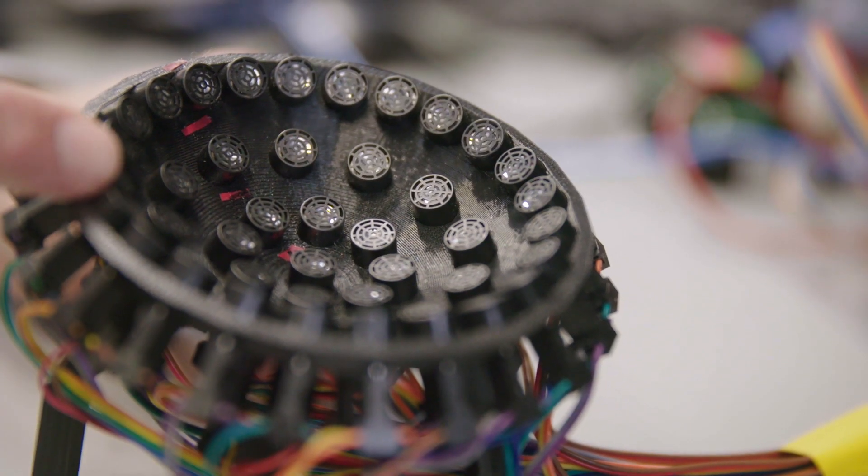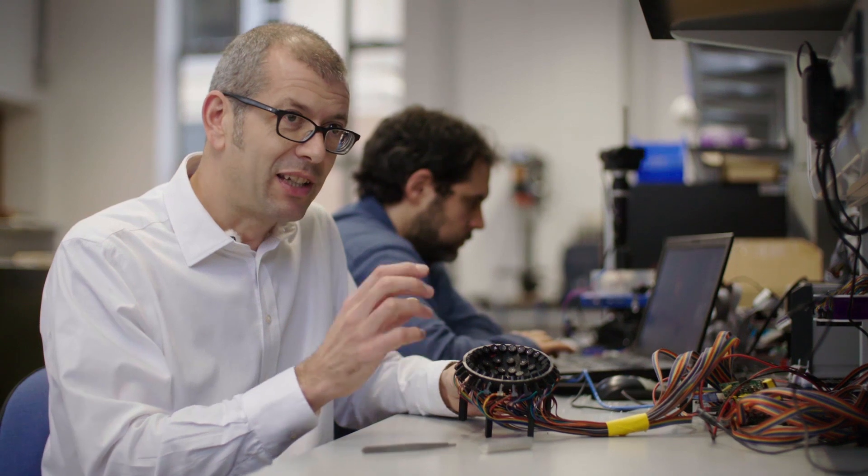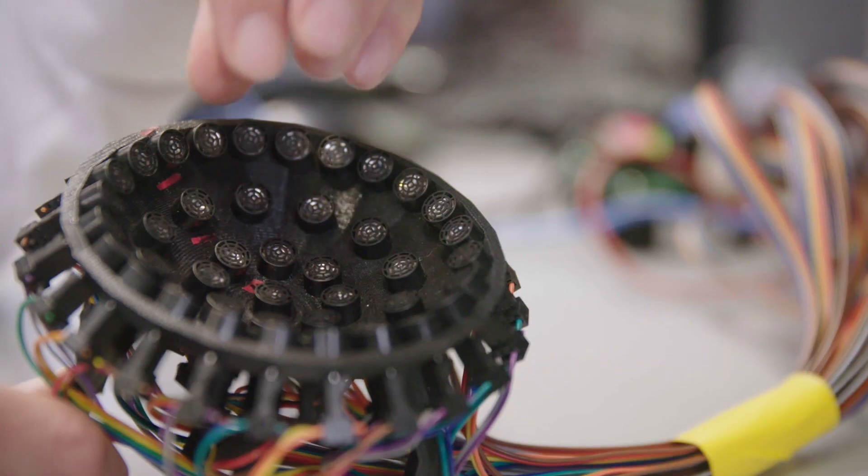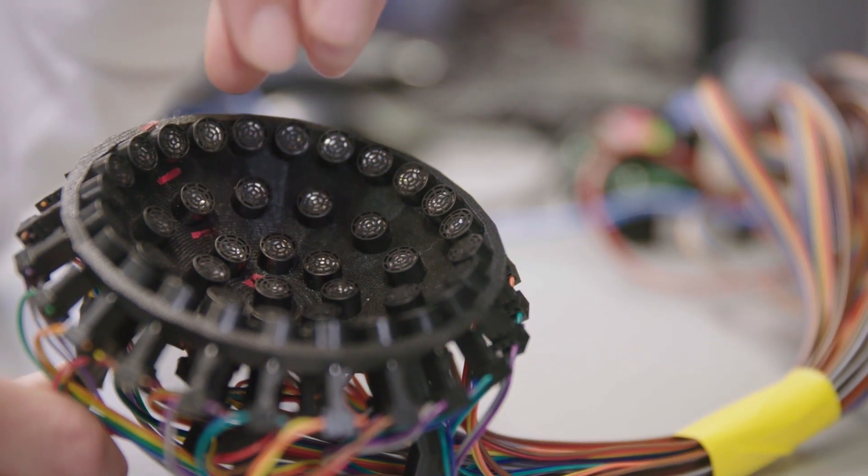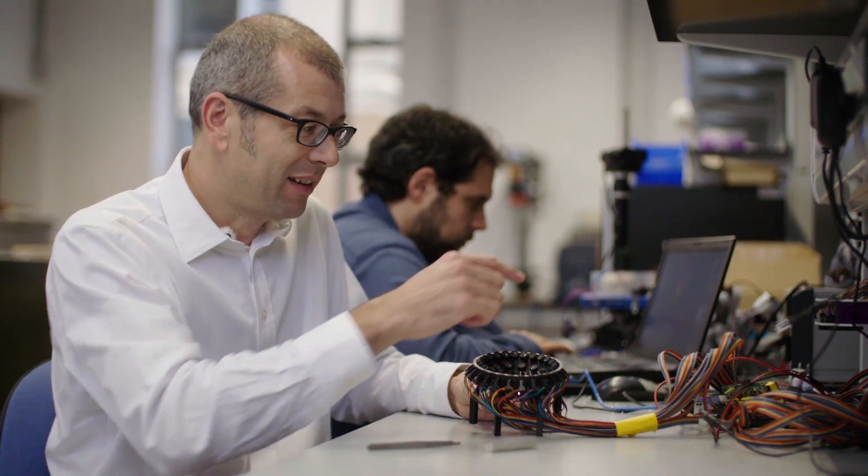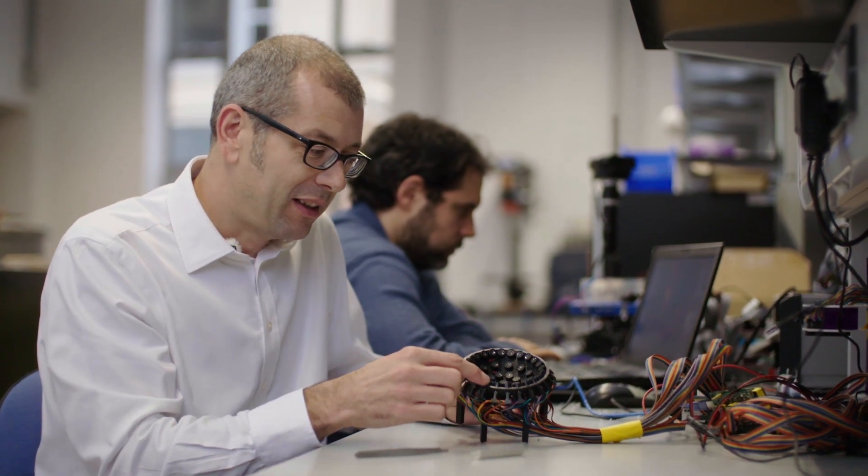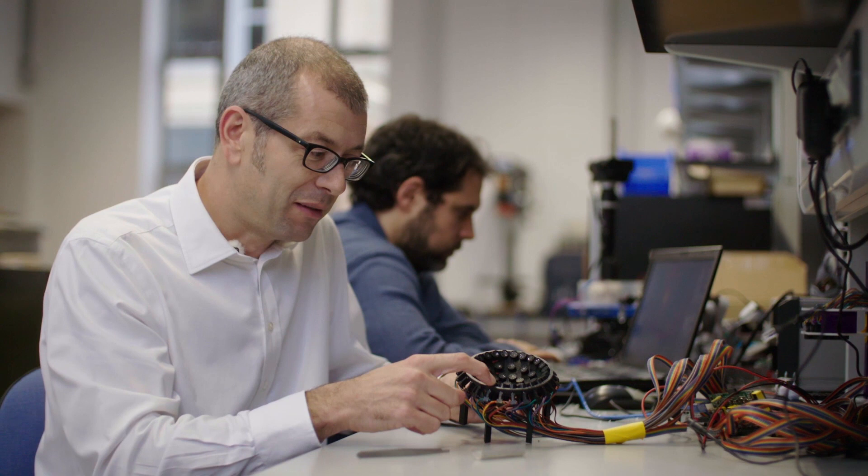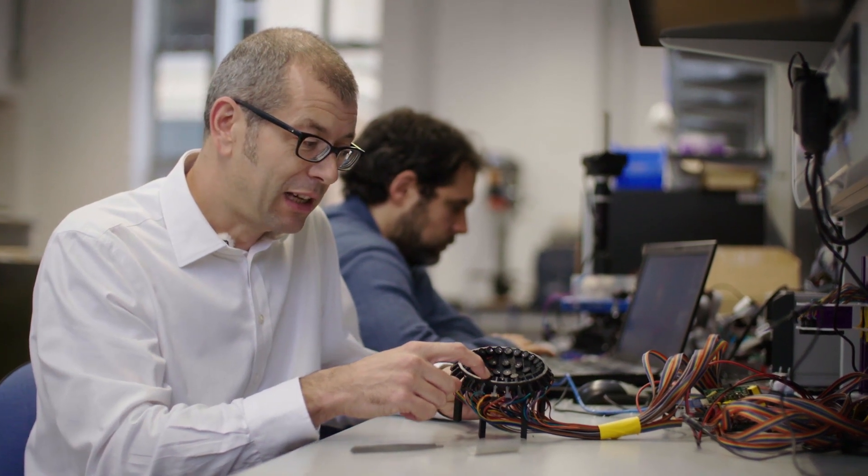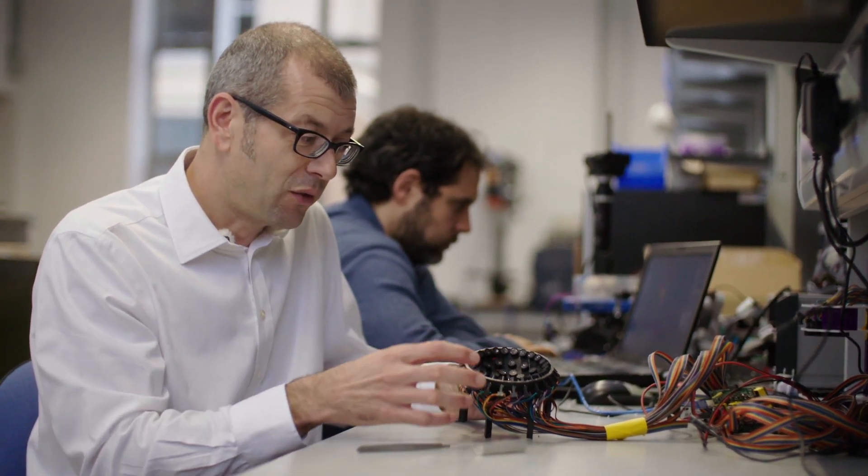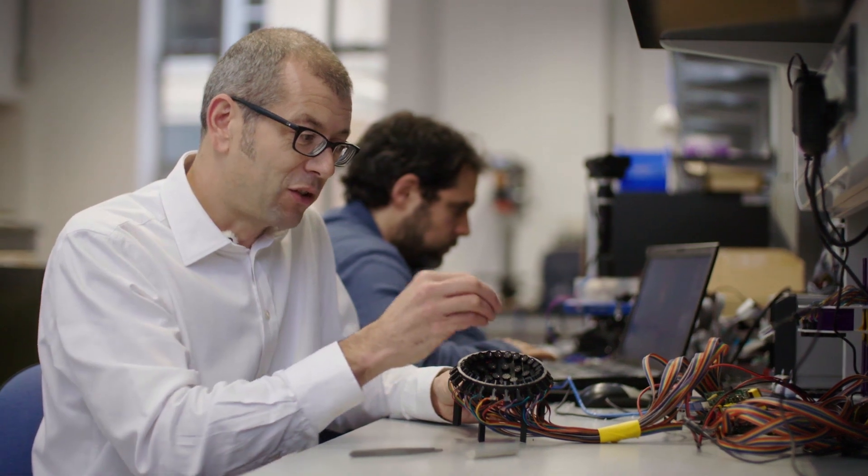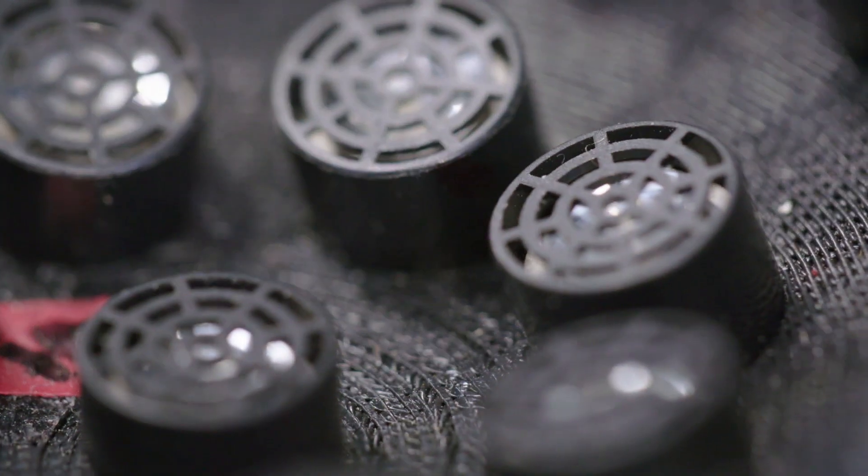At the heart of it are these things here, which are little loudspeakers. They're all outputting sound waves into this central region. They're all controlled by the computer over here, and we control the loudness of each of them, the pitch, and also the timing. All those three things together enable us to control the sound field to levitate objects.